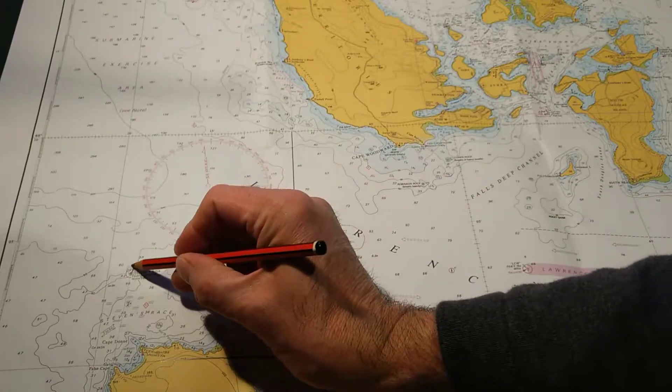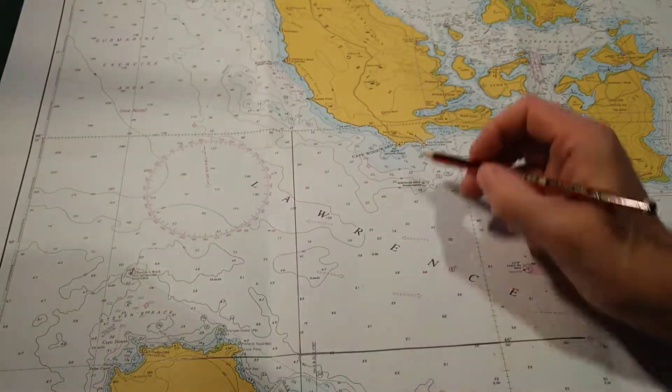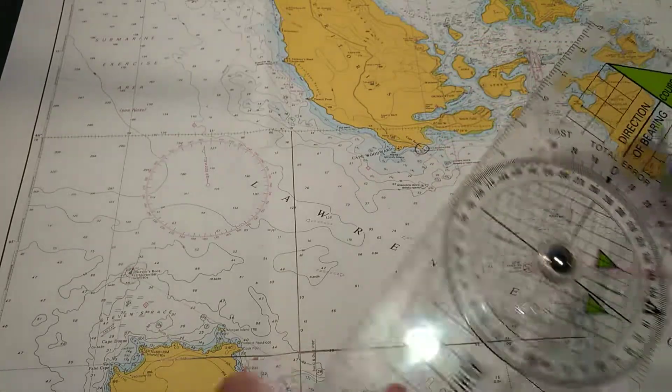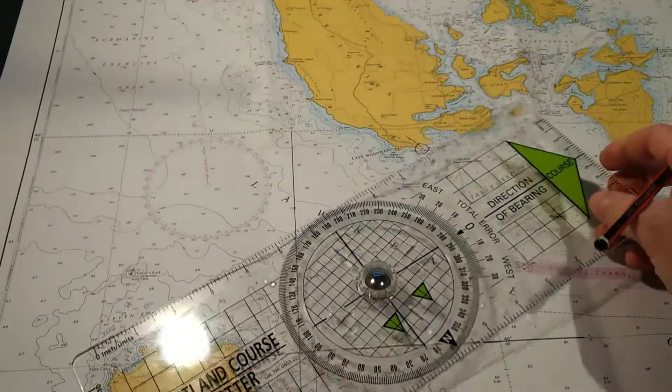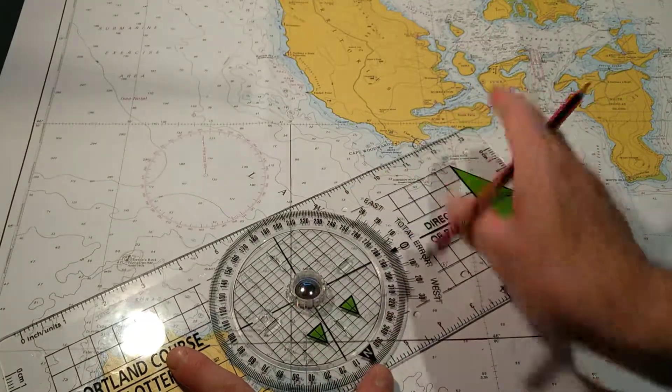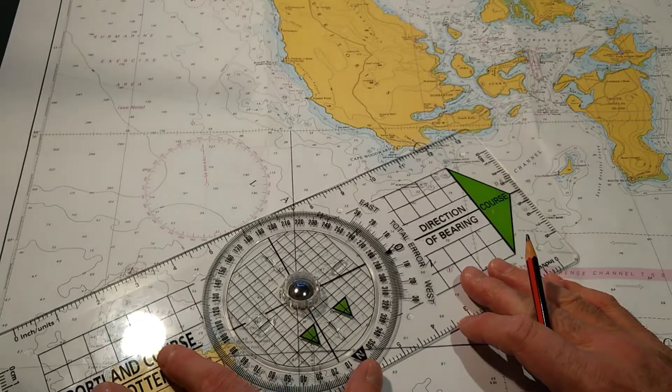I'm going to measure the bearing from Stephens Rock Lighthouse to Cape Balshaw Lighthouse. I put the edge of the plotter against those two points with the big arrow pointing in the direction I'm looking or the direction I'm traveling in.